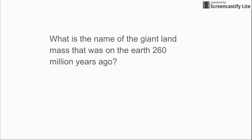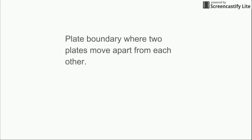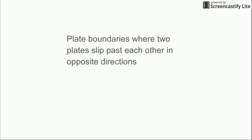What is the name of the giant landmass that was on the Earth 260 million years ago? This is a plate boundary where two plates move apart from each other — divergent. A plate boundary where two plates slip past each other in opposite directions — transform. Plate boundaries where two plates come together — convergent.